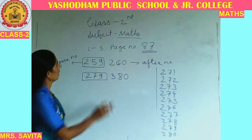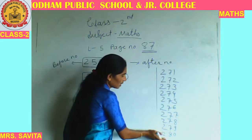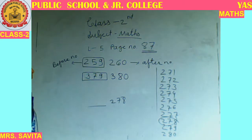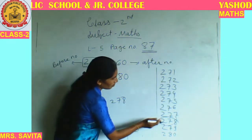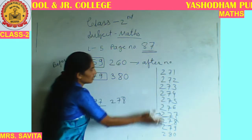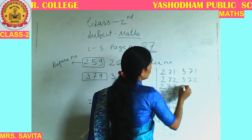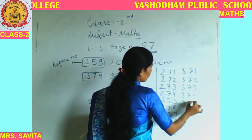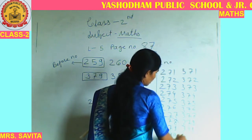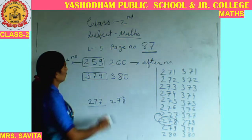Now, 278 is the after number — what number comes before it? 277. Let me verify with a sequence from 371: 371, 372, 373, 374, 375, 376, 377, 378, 379, and then 380 will come. Got it? It means we got the correct answer — 379 is the before number of 380.